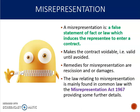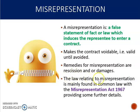A misrepresentation is a false statement of fact or law which induces the representee to enter a contract. Where a statement made during the course of negotiations is classed as a representation rather than a term, an action for misrepresentation may be available where the statement turns out to be untrue. A misrepresentation makes the contract voidable, which means the contract is still valid unless you sue in misrepresentation and avoid it. Remedies for misrepresentation are rescission and/or damages, and the law relating to misrep is mainly common law, but we'll also look at the Misrepresentation Act.